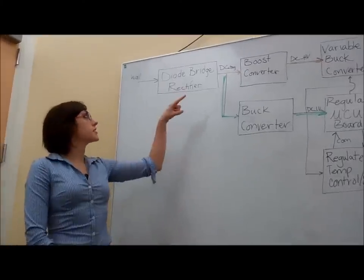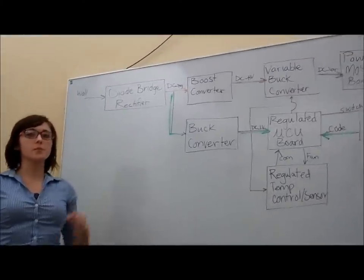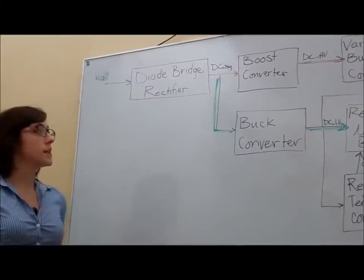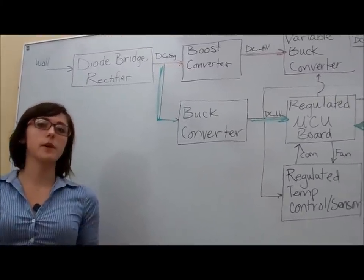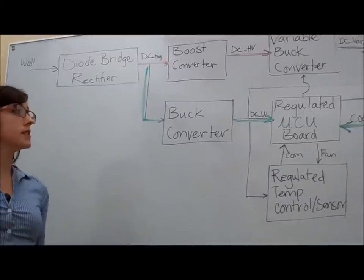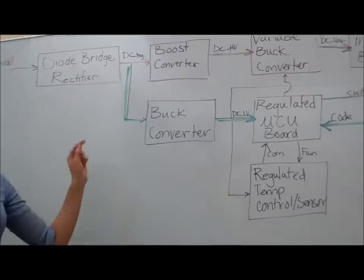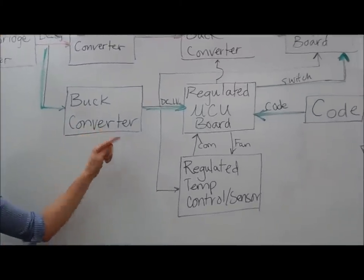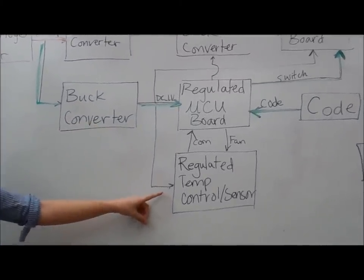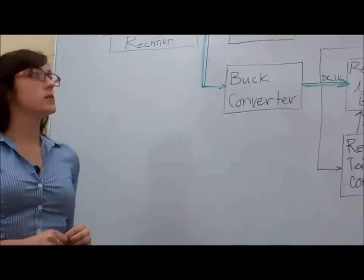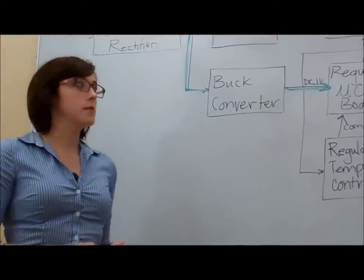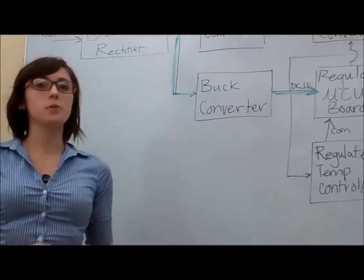The voltage exiting of the diode full rectifier is approximately 170 volts DC. This will be fed into a buck converter which will bring that voltage down to about 25 volts DC. This will then go to a regulated microcontroller board and a regulated temperature control sensor board. The microcontroller board is going to be used to control the switching of the power MOSFET board via application specific programming.